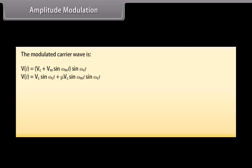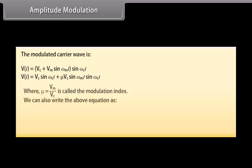This can be written as V(t) = Vc sin(ωct) + Vm sin(ωmt) sin(ωct), where μ = Vm/Vc is called the modulation index.